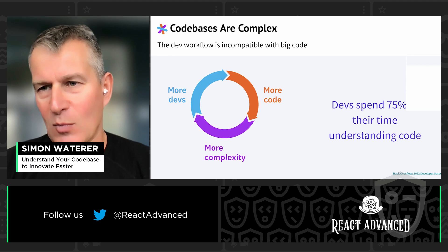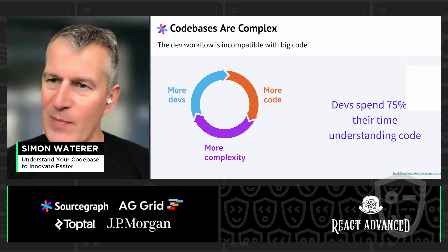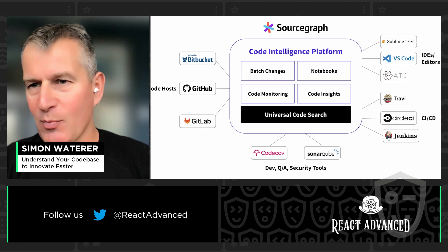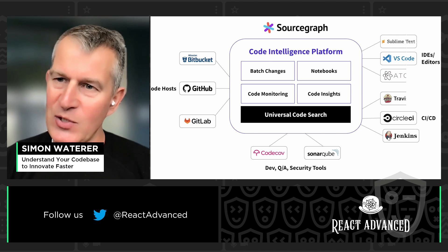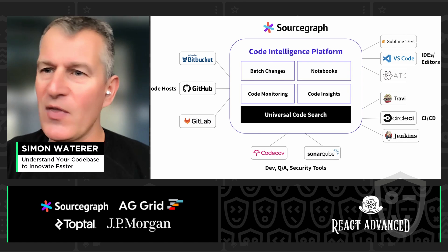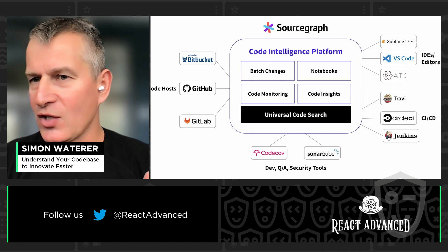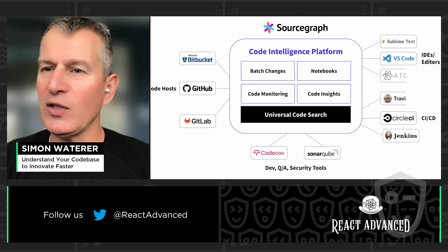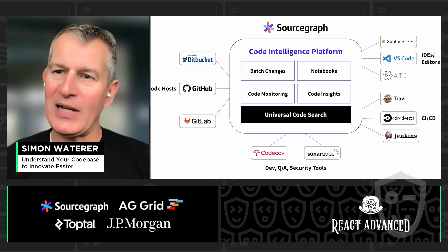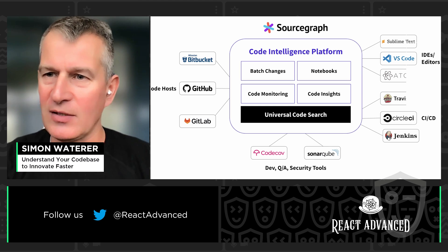How can we help people understand their code more easily? From a Sourcegraph perspective, that's essentially our goal — how can we help people get context and understanding more quickly so they can spend more time actually writing code? We have a universal search platform that allows developers using this platform to search across all of their code — all their repos, regardless of what code host they use for source control, front-end repos, back-end repos, the different services that comprise their application — to help them answer questions like how is this service implemented, who else is using this component or function.